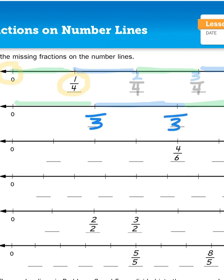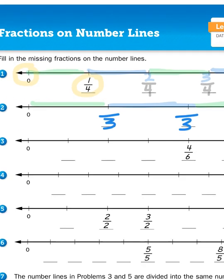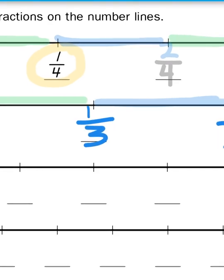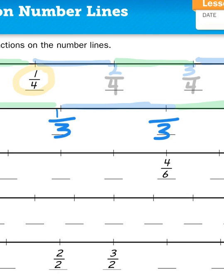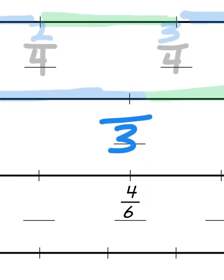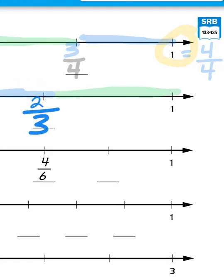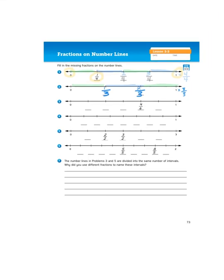So the first segment from 0 to this hash mark right here would be 1/3. And the distance between the 0 to the second hash mark would be 2/3. And again 3/3 is equivalent to one whole. So that's how we get those fractions there.